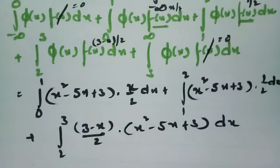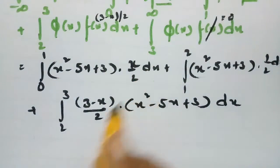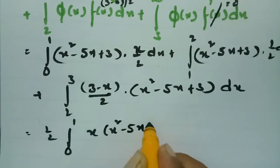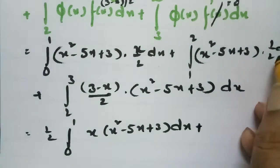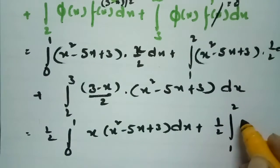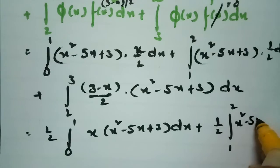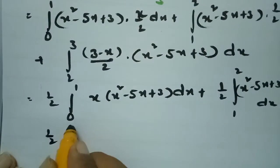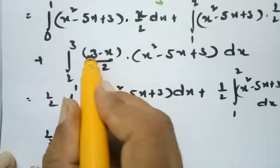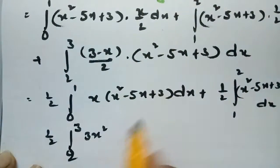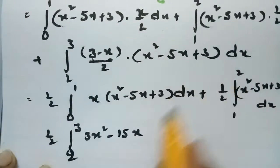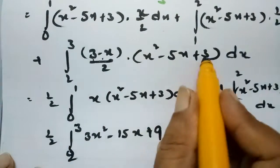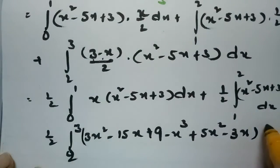We factor out 1/2 from each integral. For the third integral, we expand (3 - x)(x² - 5x + 3): multiplying gives 3x² - 15x + 9 minus x³ + 5x² - 3x, which simplifies to -x³ + 8x² - 18x + 9.